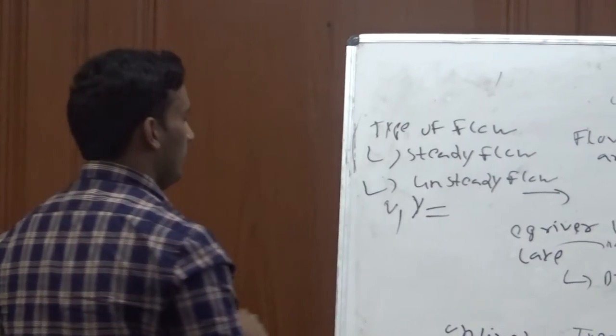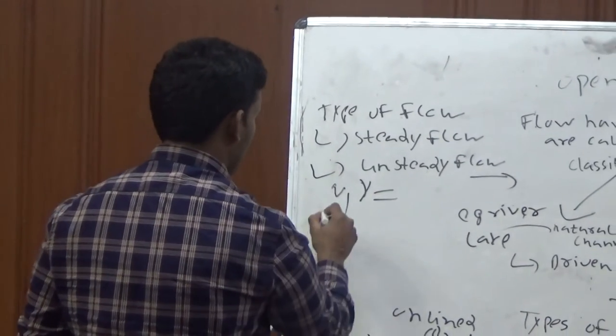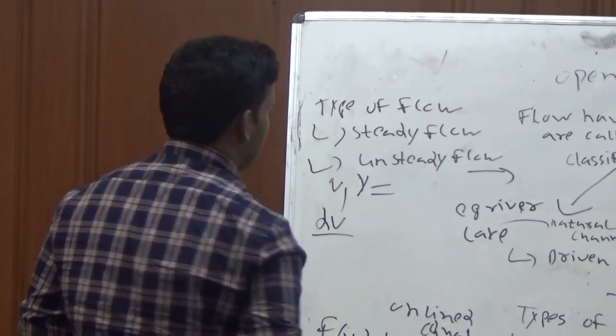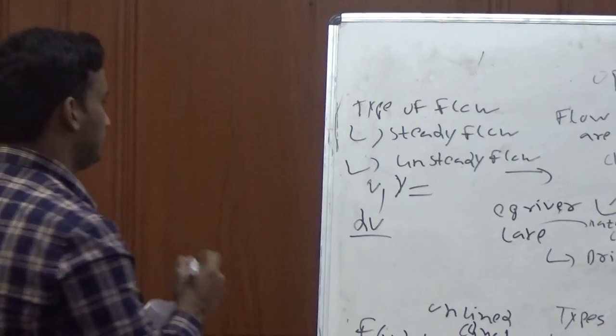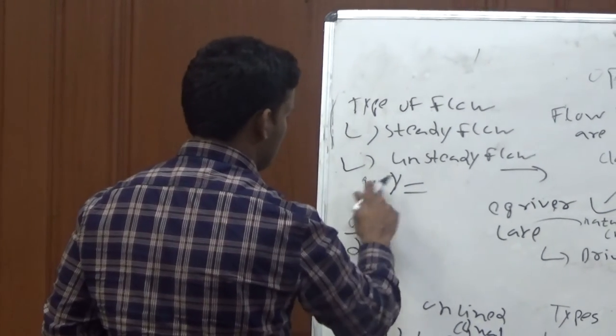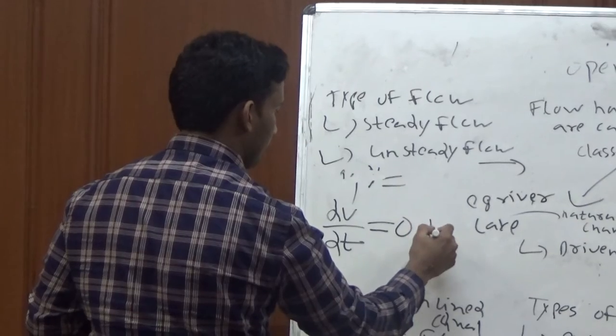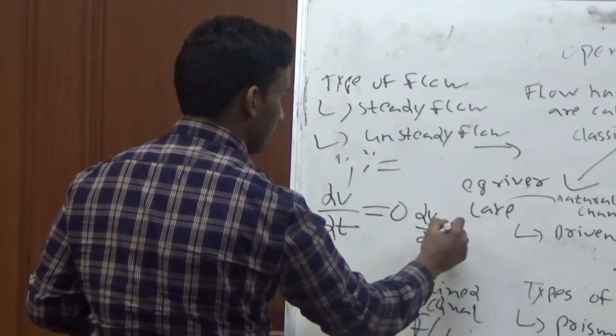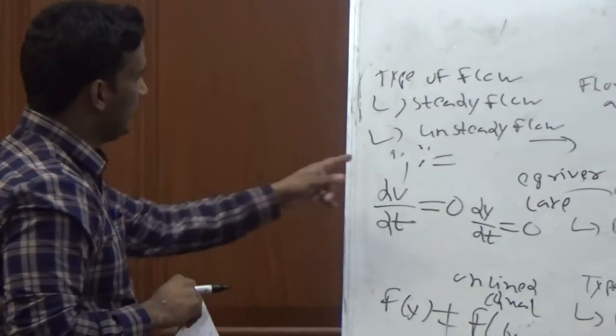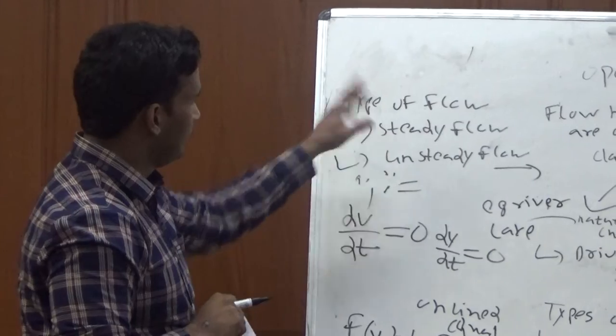For steady flow, flow parameters and depth of flow are constant. This is the equation for representing steady flow. These are not changing with respect to time in steady flow.